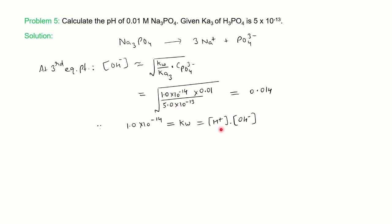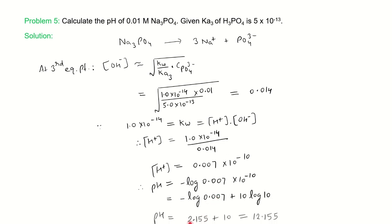Once you get OH⁻, put it in the equation Kw = [H⁺] × [OH⁻]. Kw value we know is 1 × 10⁻¹⁴. H⁺ we can find it. Once you find H⁺, you can put the value in pH = -log[H⁺] and you will get the pH. You can notice the pH is highly alkaline, 12.155. This suggests that PO₄³⁻, that is the third equivalence point, comes in very alkaline medium.